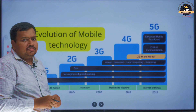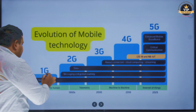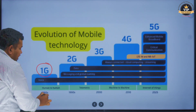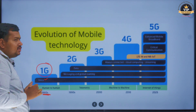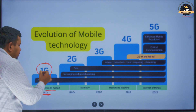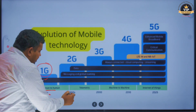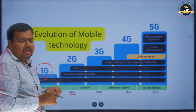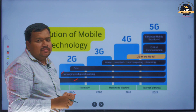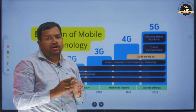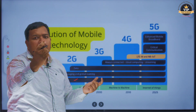Now let's look at the evolution of mobile technologies, starting from 1G to 5G. In the 1980s, 1G was developed — using 1G we could only make voice calls. Then in the 1990s, 2G was developed. Using 2G we could do voice calls, messaging, and global roaming. Using 2G we can also access mobile data.